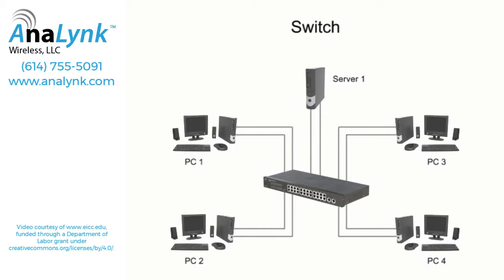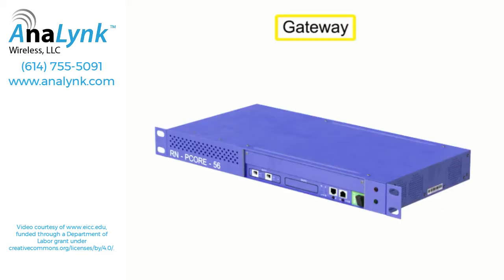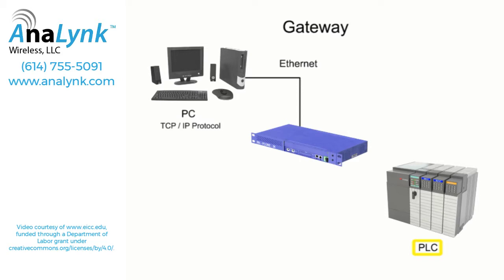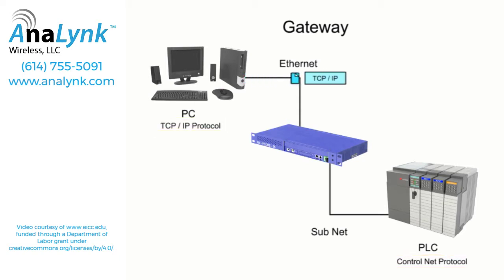When two segments of the same network have different communication formats, a gateway is needed to connect them. A gateway performs a conversion function so that a computer on an ethernet network using a TCP/IP protocol may communicate with a PLC on a subnet using the ControlNet protocol. Even though these two protocols are incompatible, the gateway can connect them on the same network and allow them to function together.